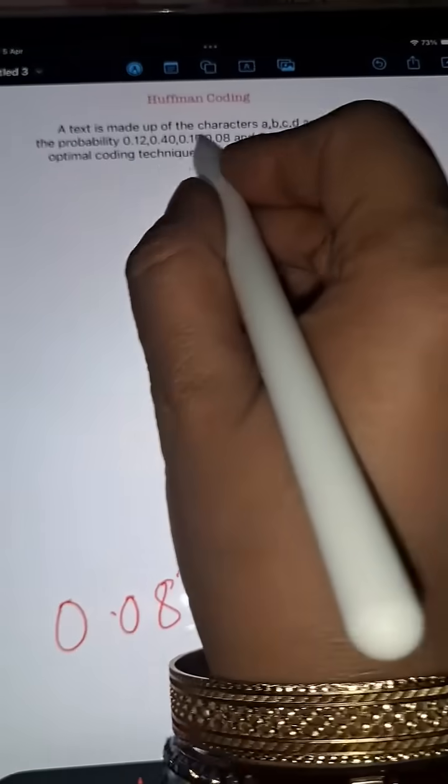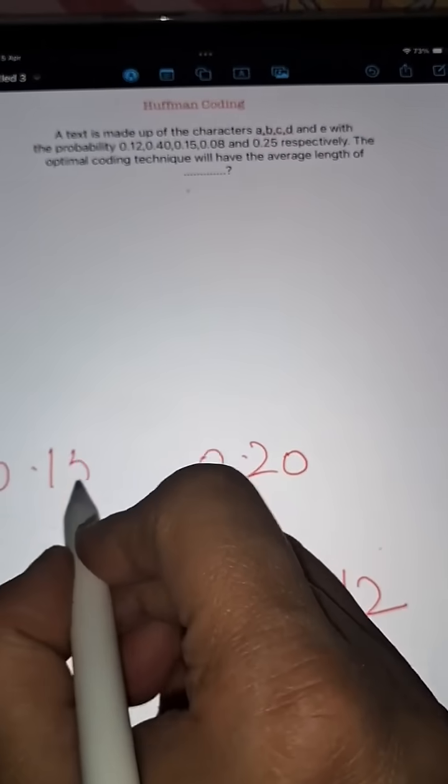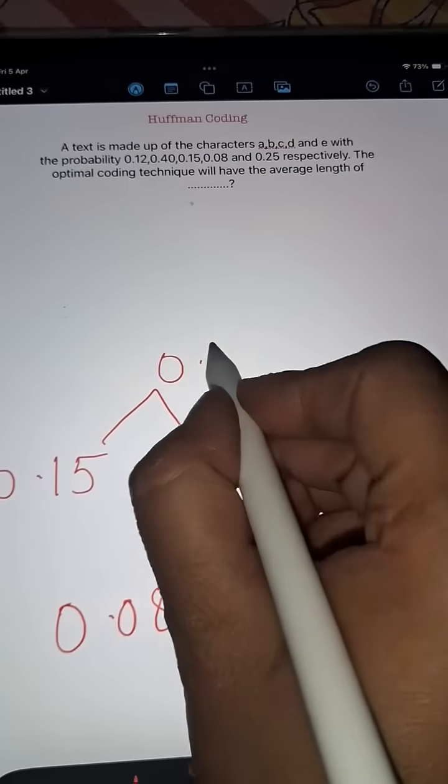Now which one is the next less frequent? You will see 0.15, so note down 0.15 and again add it up. It will give you 0.35.